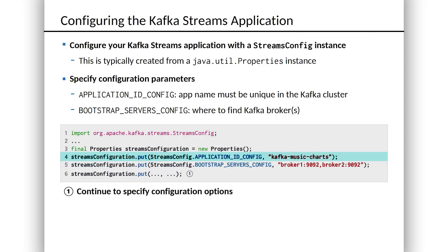Application ID config is somewhat analogous to a group ID if you're making a consumer group, but really it's just the name of this streaming application. I might be deploying a massive system that has 50 different stream processing applications representing 50 different microservices all over the system. Each one of those is going to have a different name, a different ID — it's kind of like the project name or build artifact name. Every instance of this application that I deploy with that same ID will act in Kafka's mind like an instance of the same stream processing application, and Kafka will distribute the load among all of those instances.